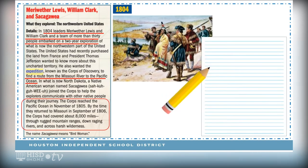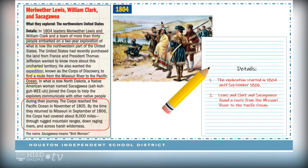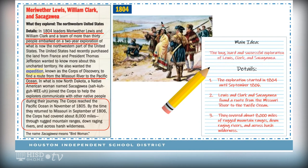This section of the text focused on the Lewis, Clark, and Sacagawea exploration of the Northwestern United States in 1804. I found numbers and extreme and absolute language that caught my attention, and I made annotations as I went. I annotated the phrases and sentences I thought were the most important key ideas. Here are the details I gathered: Detail 1 — the exploration started in 1804 and lasted until September 1806. Detail 2 — Lewis, Clark, and Sacagawea found a route from the Missouri River to the Pacific Ocean. Detail 3 — they covered about 8,000 miles of rugged mountain ranges, down-ranging rivers, and harsh wilderness. Based on these details, the main idea of this section is the long, hard, and successful exploration of Lewis, Clark, and Sacagawea.